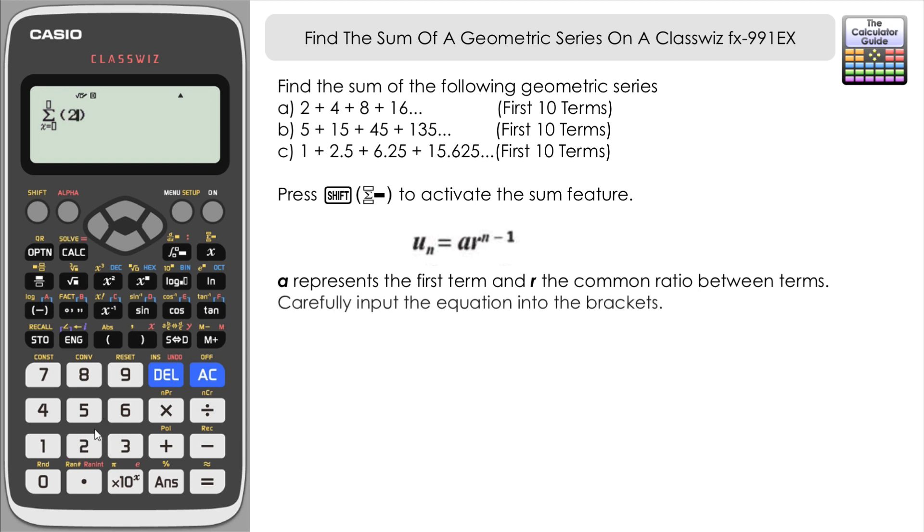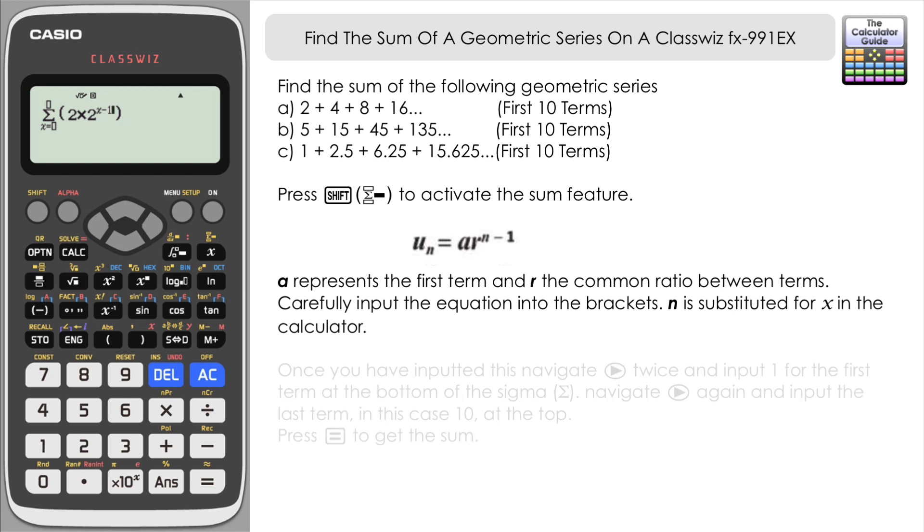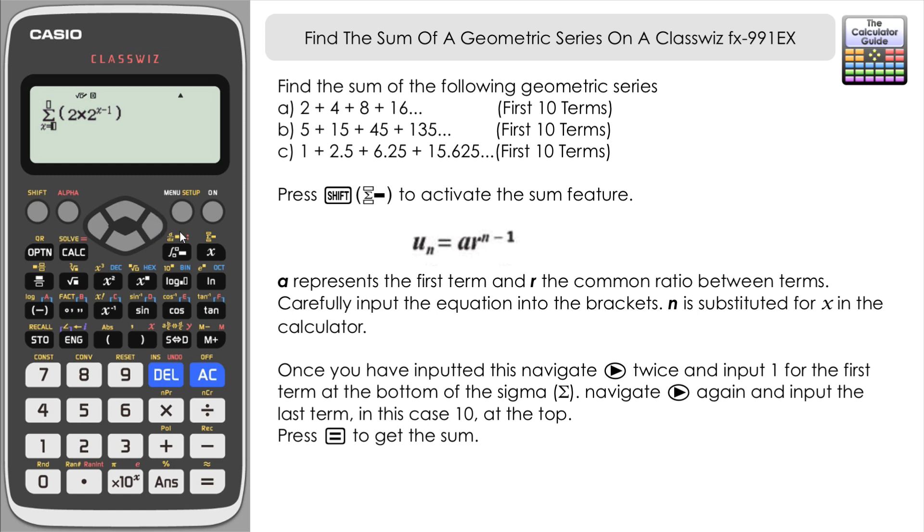So let's input this into the ClassWiz. So it's 2 times and then our R is 2. So 2 times 2 to the power of, the power button. And then the sum feature works in terms of x rather than n. So we need to input x minus 1 as our exponent there rather than n minus 1. Navigate right twice and then we can input our limits on the sigma notation that we have here. We want the sum of the first 10 terms starting with the first term. So we need 1 down here x equals 1. And then at the top we want the final term that we want to find the sum to which is 10.